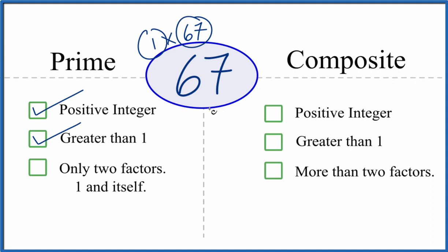But are there any more? It turns out that there aren't any more whole numbers that go evenly into 67. So there are only the two factors here. That makes 67 a prime number.